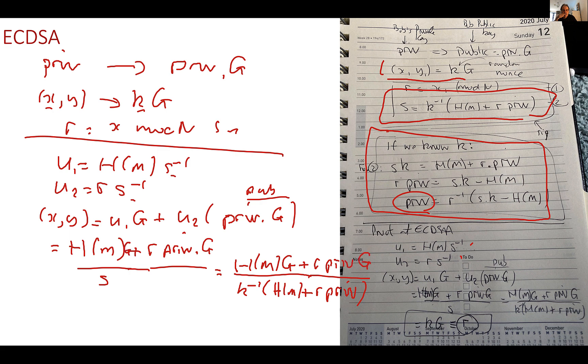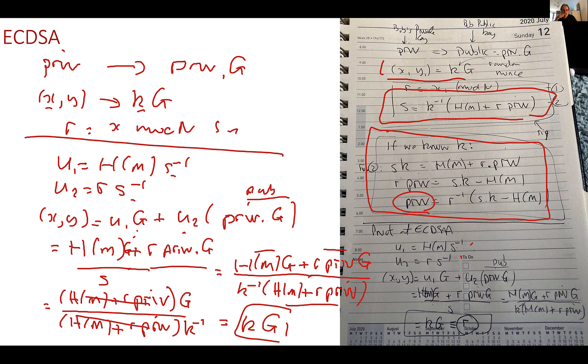Okay so if we then replace our values here for s then we can have that. And then the top there h(m).G plus r.priv.G there. And then this is obviously the same as that so we can cancel that, so that becomes (h(m) + r.priv) times G upon (h(m) + r.priv).k⁻¹. We cancel that out and we end up with k.G which should be the same as that value there. So if this is Bob's signature then Alice will check that the r value is equal to what she's calculated here.